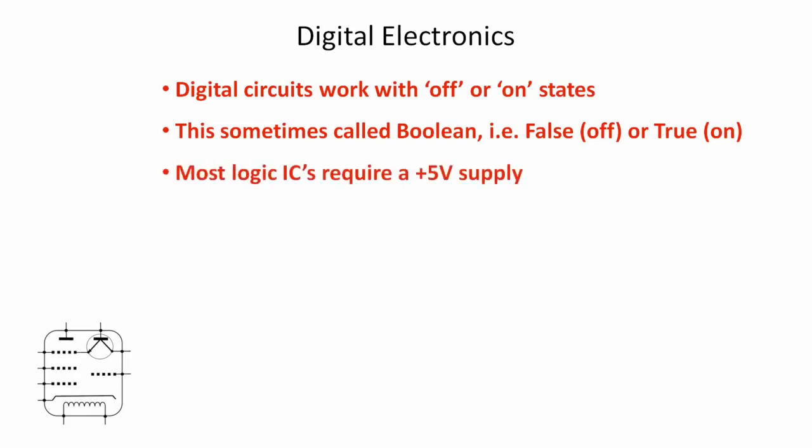Most logic ICs use a 5 volt supply, not all of them but the vast majority do. CMOS logic gates define off as being between 0 and 1.5 volts, and they define on as being between 3.5 and 5 volts. So it's not quite the same as on or off in the sense of a light switch or something, but there are two definite voltage ranges for the true and the false state.